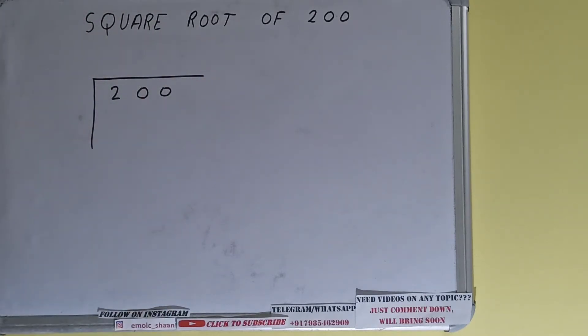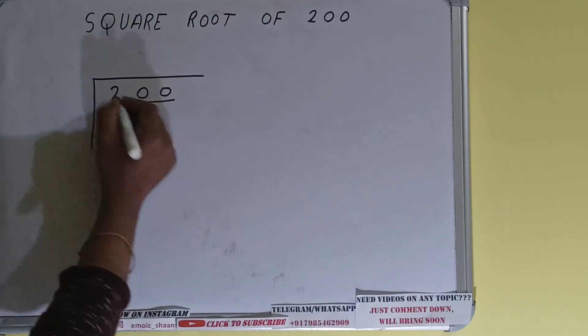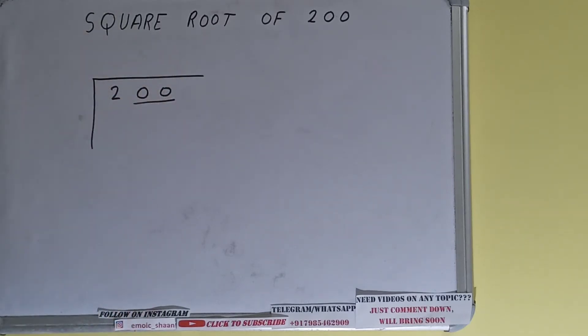The next thing we need to do is form pairs from the right hand side. So only one pair can be formed and this two will be left out. First we'll divide these two and then we'll bring down numbers in pair. The rule is whatever number we write here we have to write here also.